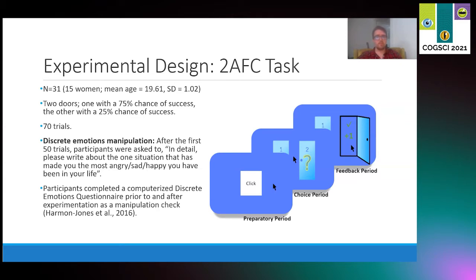Participants were randomly assigned to four discrete emotion conditions: happy, sad, angry, and desire. After the 50th trial, they were told to take a break from the decision task and to write about a situation that made them feel most happy, sad, or angry depending on their condition.